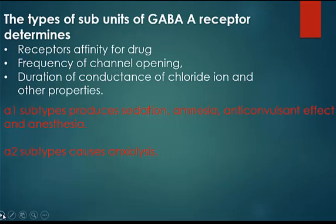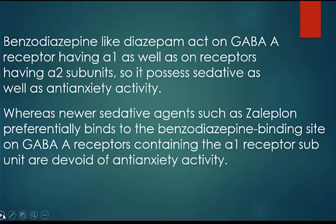Drugs acting on GABA-A receptors containing the alpha-1 subtype produce sedation, amnesia, anticonvulsant effects, and anesthesia. Drugs acting on GABA-A receptors containing the alpha-2 subtype cause anxiolysis. Benzodiazepines like diazepam act on GABA-A receptors having both alpha-1 and alpha-2 subunits, so they possess sedative as well as anti-anxiety activity. Whereas newer sedative agents such as zaleplon preferentially bind to the benzodiazepine binding site on GABA-A receptors containing the alpha-1 subunit and are devoid of anti-anxiety activity.